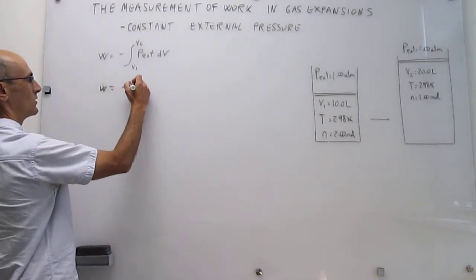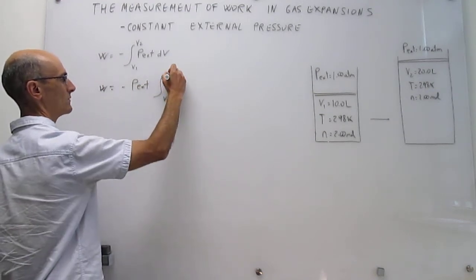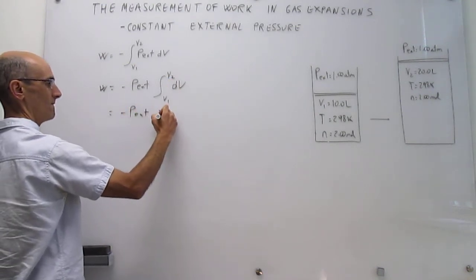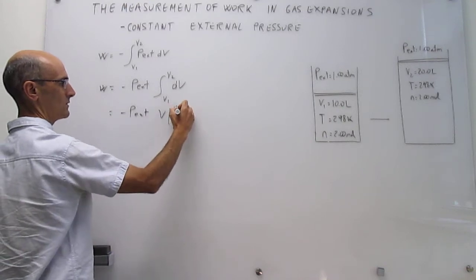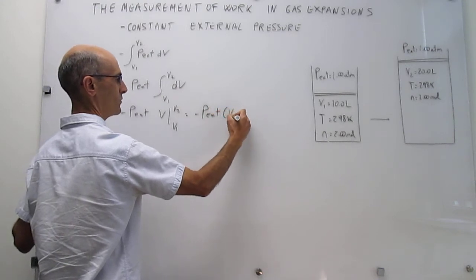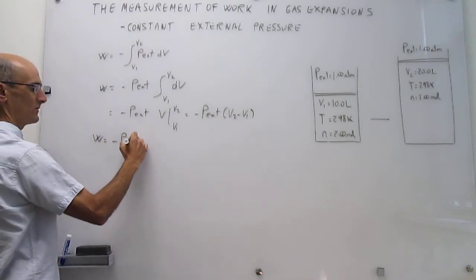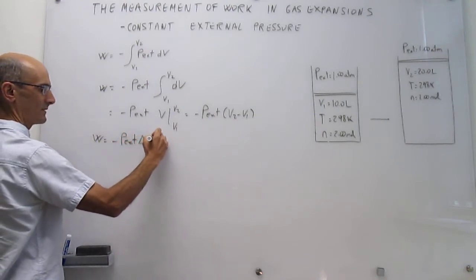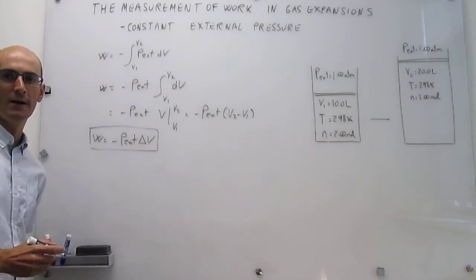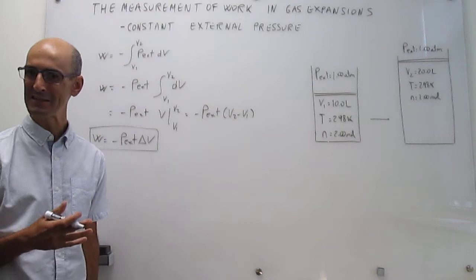Work is going to be equal to minus P external, and then the integral of differential of V evaluated from V1 to V2. But that is just simply minus P external V evaluated from V1 to V2, which is simply minus P external times V2 minus V1, or work equals minus P external delta V. Notice how simple the expression turns out to be. You simply have to multiply the external pressure times the change in volume in the gas, and that will be the work.